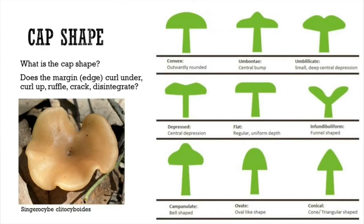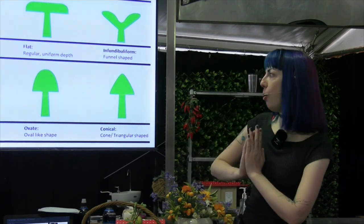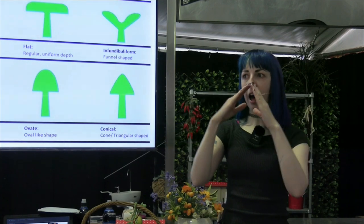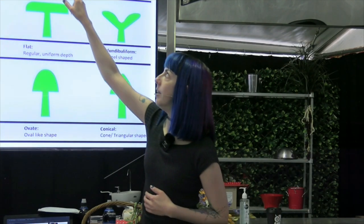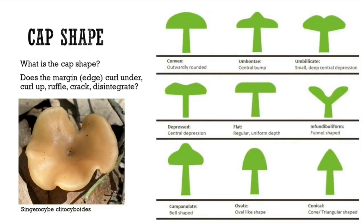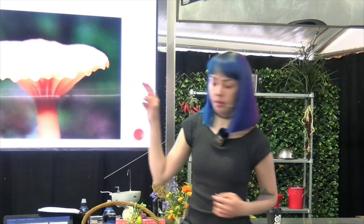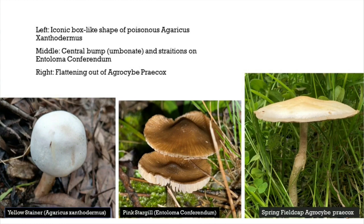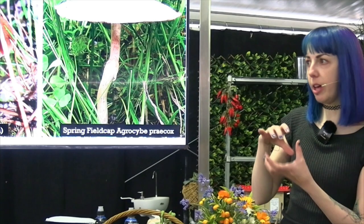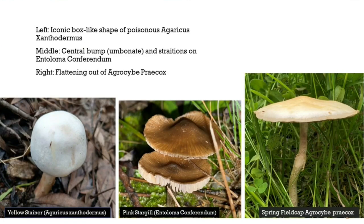Cap shape: trying to differentiate between different cap shapes is very important. Does it look like a funnel, or does it have a point, or does it have an umbo — a little bump in the centre? Keep in mind that as mushrooms mature the cap shape changes. The young yellow stainer has a boxy shape and keeps that shape throughout its life, which is a key feature. Another species has a central umbo with striations, and a springfield cap always flattens out when mature.